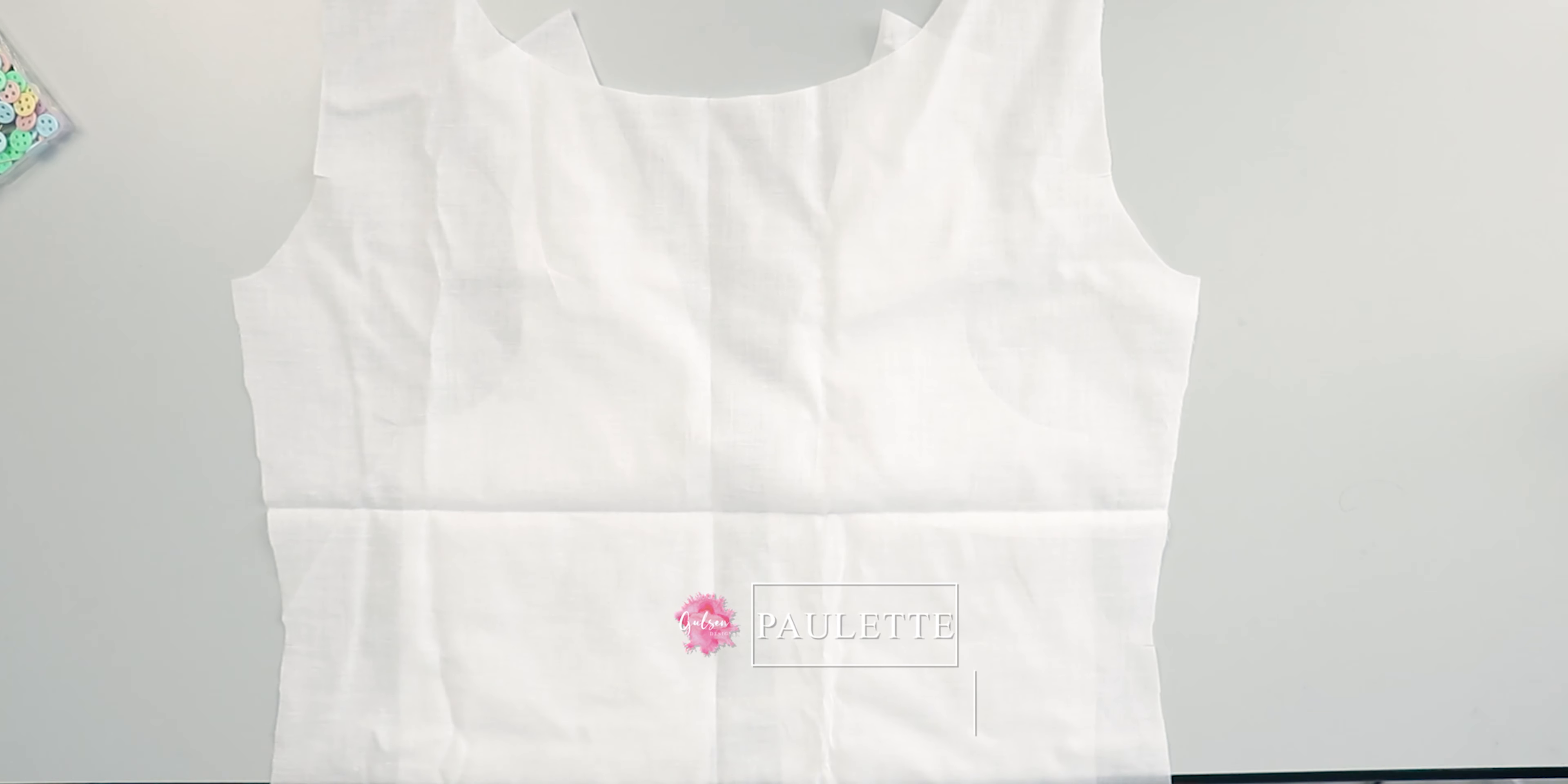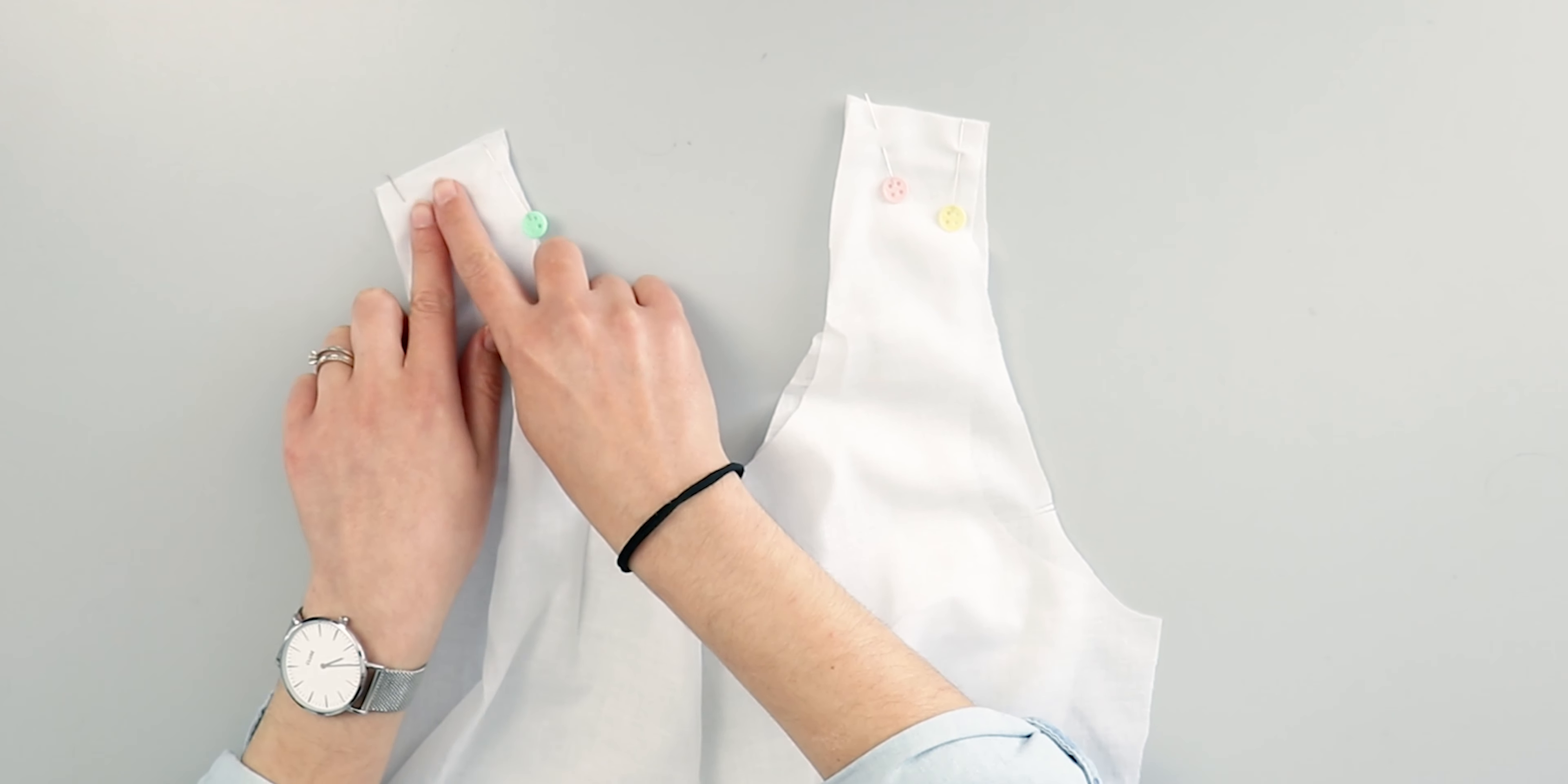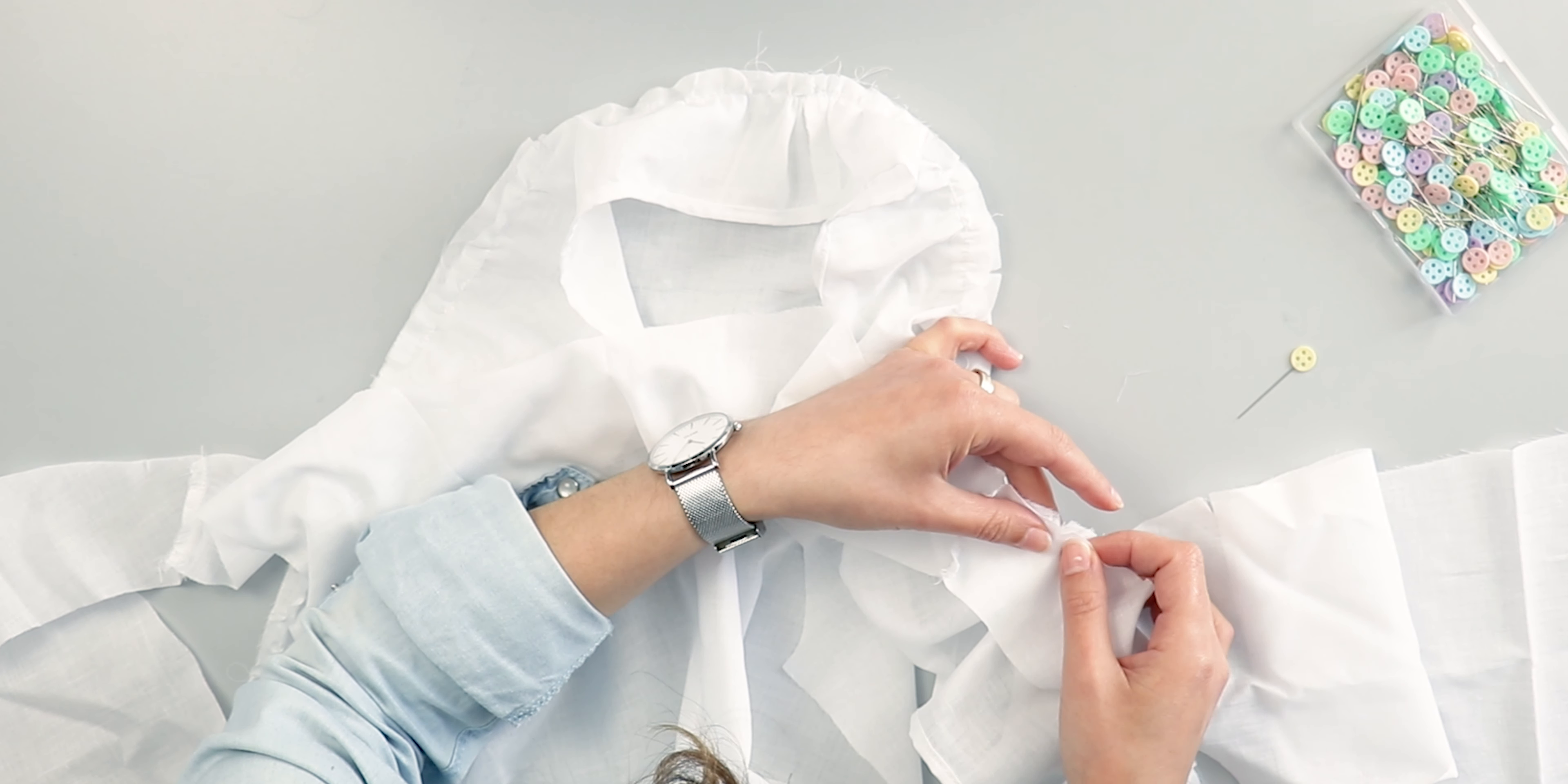Pin and sew the shoulder seams of the front panel B's and the back piece. Next, overlock the edges and iron the seam allowance towards the front.